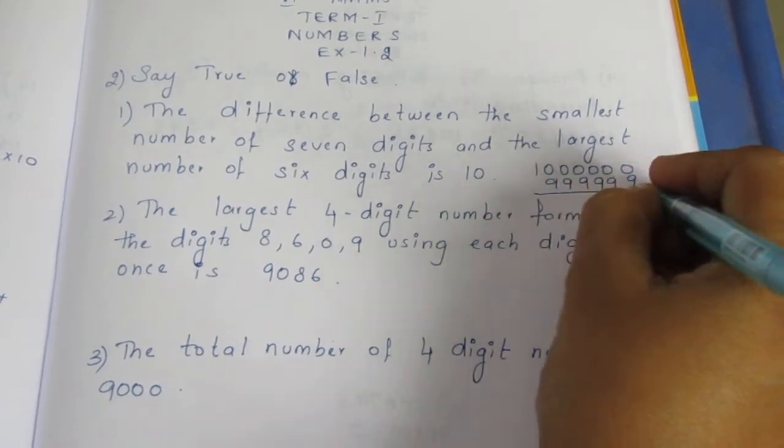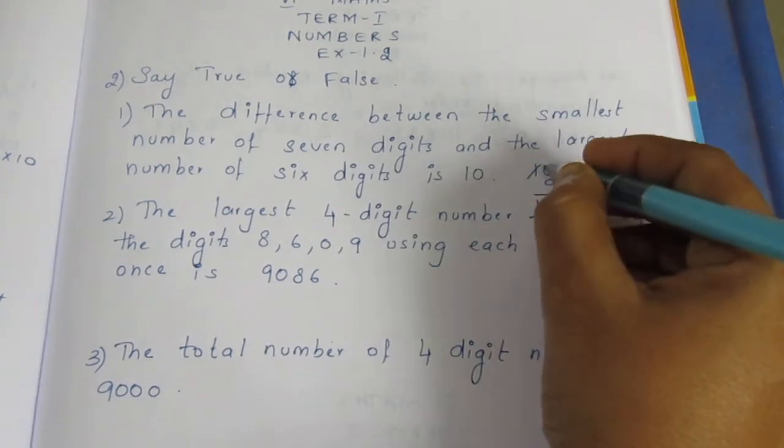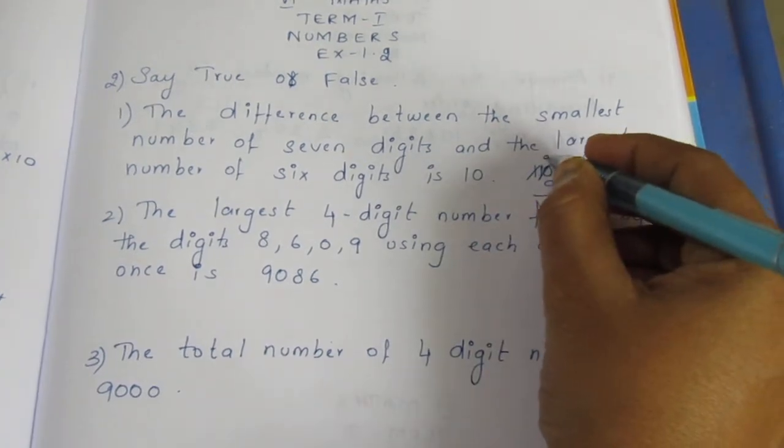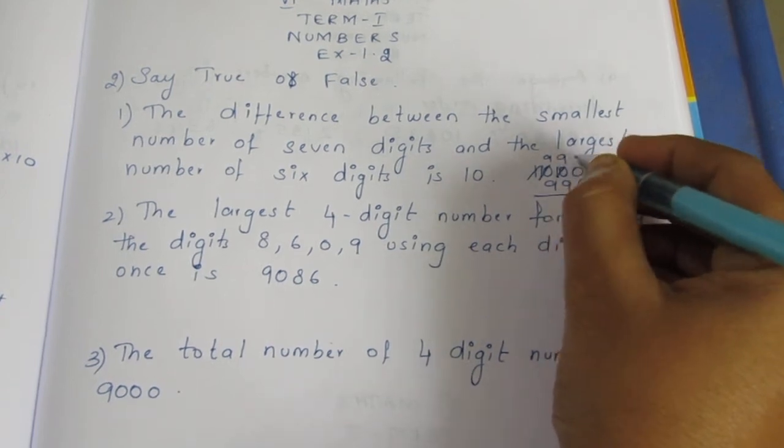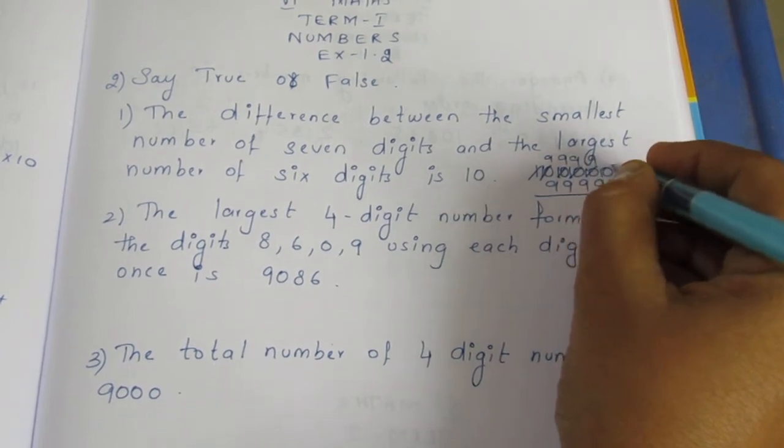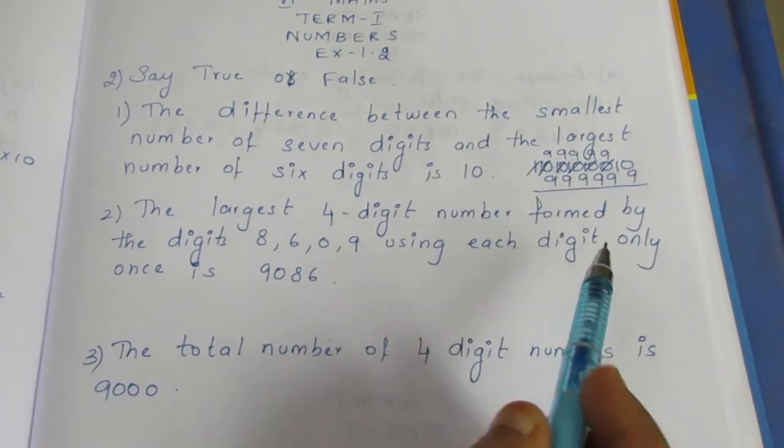If you subtract these numbers, you borrow from the 1, making it 10. Then 10 minus 9 equals 1. Each place becomes 10 minus 9, giving us 1.